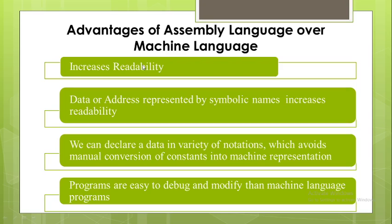Instead of representing a particular address like 100, 105, or 500, we give symbolic names to these addresses. So instead of reading the address value, it is easy to read the symbolic names, which increases readability. The third advantage is that we can declare data in a variety of notations, which avoids the manual conversion of constants into machine representation and makes it easier for the programmer.